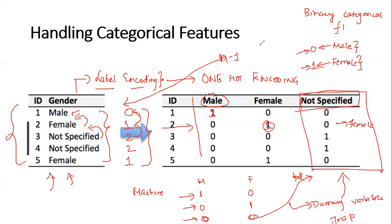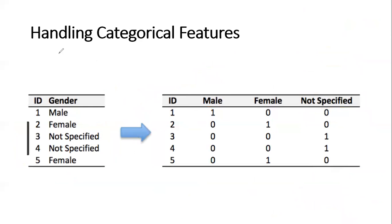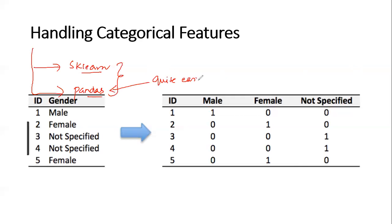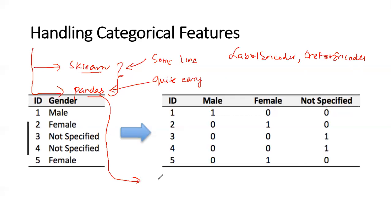Going ahead, I'll show you how to code this by taking a wonderful example of a dataset, writing the code line by line. I'll suggest two different ways - one using sklearn library and one using pandas library. What I feel is that pandas library is quite easy, whereas sklearn requires some lines of code using LabelEncoder and OneHotEncoder libraries. I would suggest using pandas because there's a function called get_dummies which helps you convert your whole category feature into dummy variables within a single line of code.